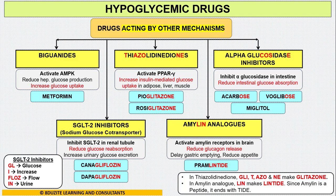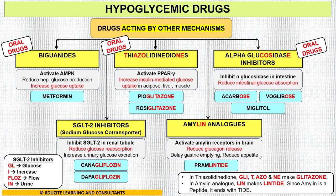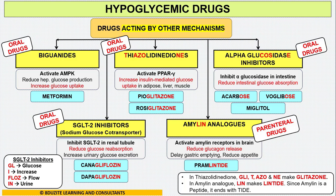Now, which of these drugs are oral and which are parenteral? Biguanides, thiazolidinediones, alpha-glucosidase inhibitors, and SGLT2 inhibitors are given orally, but amylin analog is given parenterally. This confirms the rule: GLP-1 agonists and amylin analog both end with T-I-D-E, so any drug ending with TIDE is a parenteral drug; all others are oral.